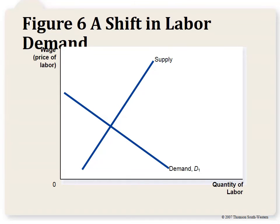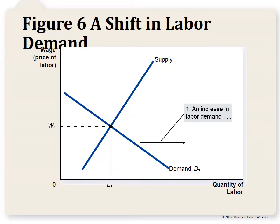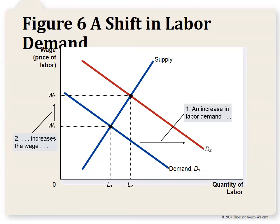Now let's look at an increase in demand for the product. If the product workers produce becomes more valuable, the demand curve shifts to the right. This raises the value of the marginal product of workers, causing both an increase in the overall wage and an increase in the quantity of labor employed in the market.